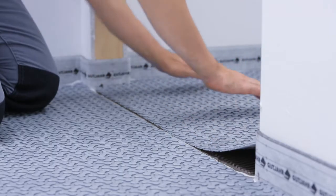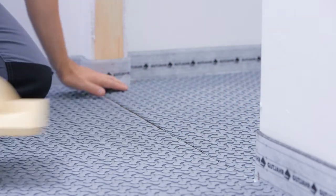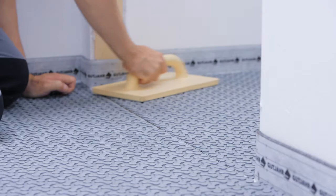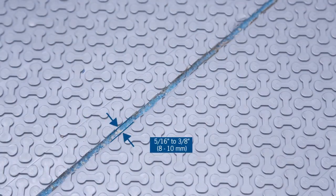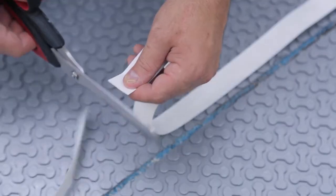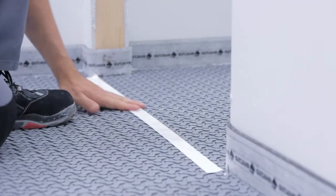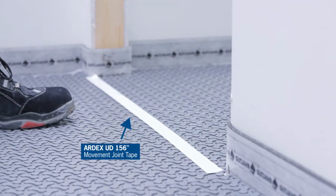All movement joints and perimeter movement joints must be honored up through the membrane and the tile installation per TCNA and TTMAC guidelines. Pull the mats to the joint, leaving a 5/16 to 3/8 inch space over the joint. To avoid mortar getting into the joints, place the self-adhesive Ardex UD-156 joint movement tape over the joint area.